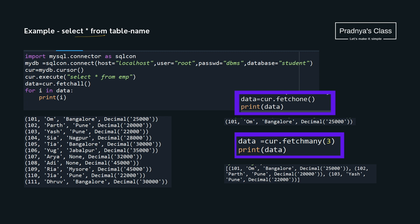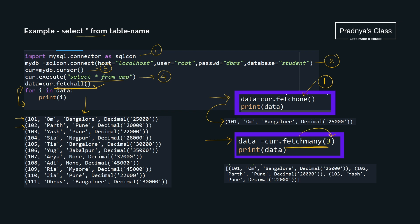Now let's understand SELECT * FROM table_name. Steps one, two, and three are always the same. With the execute command we write SELECT * FROM employee. Using fetchall() we fetch the result set and iterate over it to print row by row. If we use fetchone() instead, only one record is returned. With fetchmany(3), three rows are fetched and printed, since we specified the number three.